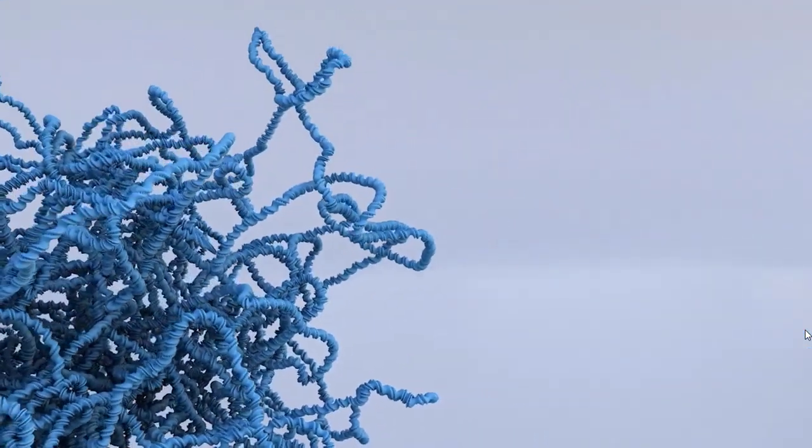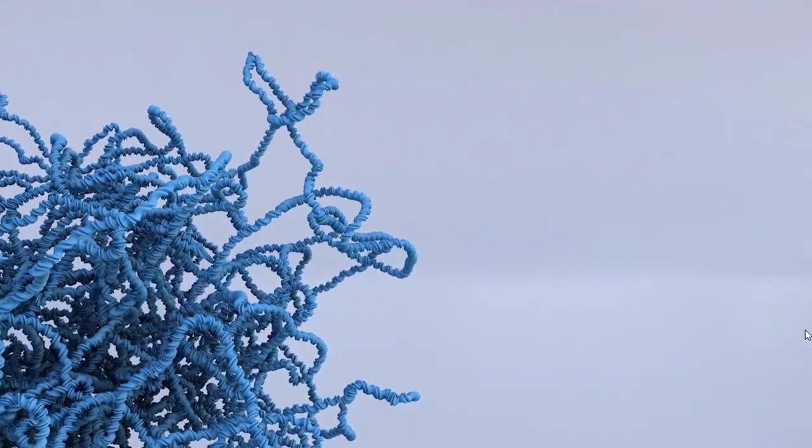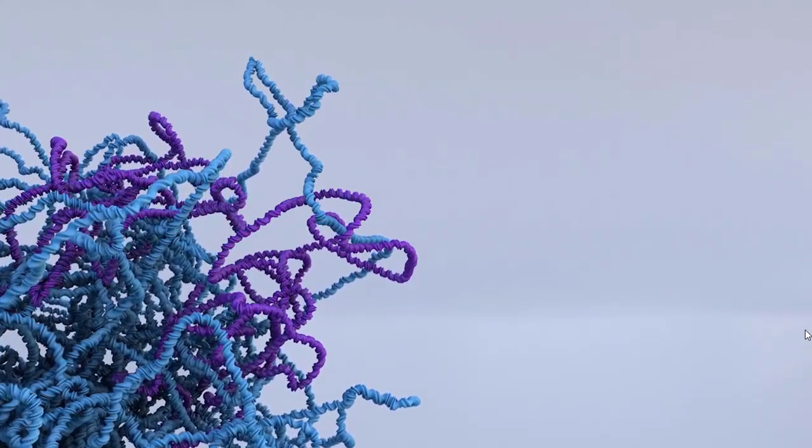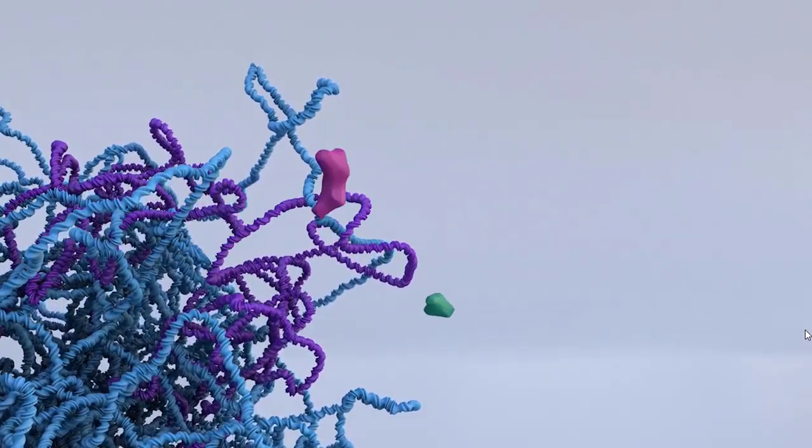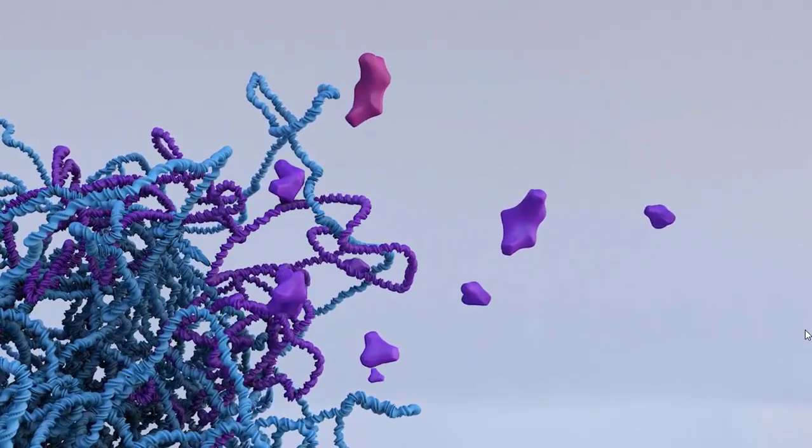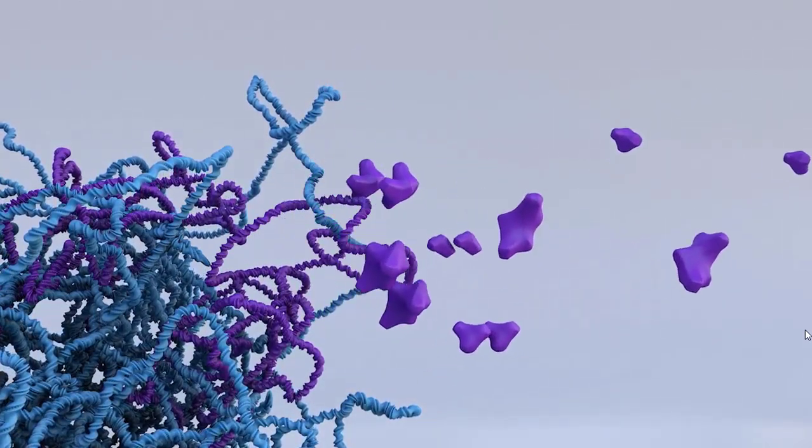When variations occur in areas of the genome that code for proteins, they often have consequences. These changes can affect the protein product itself, or they can affect when, where, or how much protein is made.